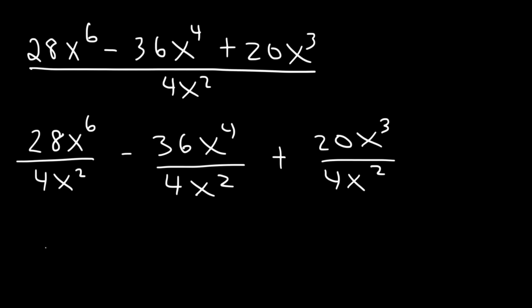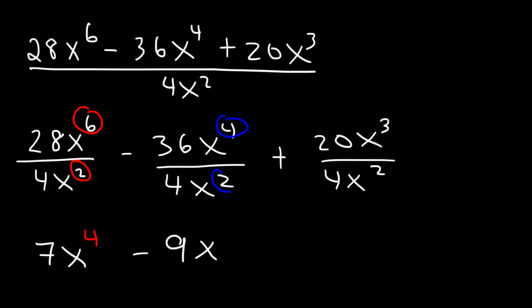28 divided by 4 is 7, and 6 minus 2 is 4. 36 divided by 4 is 9, and 4 minus 2 is 2. 20 divided by 4 is 5, and 3 minus 2 is 1. So the answer is 7x to the fourth minus 9x squared plus 5x.